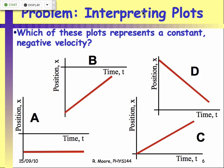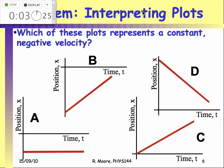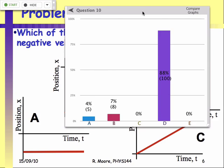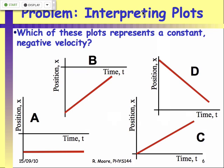Quick last question: which of these plots represents a constant negative velocity — A, B, C, or D? The correct answer is the only plot with a negative gradient. The one trying to fool you had negative values on the position axis but still had a positive gradient. We'll carry on with kinematics on Friday.